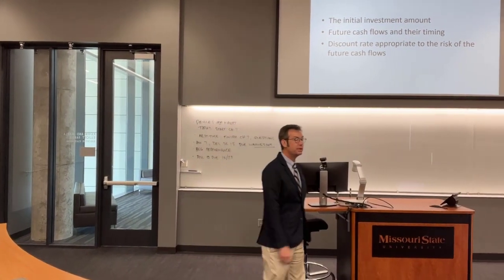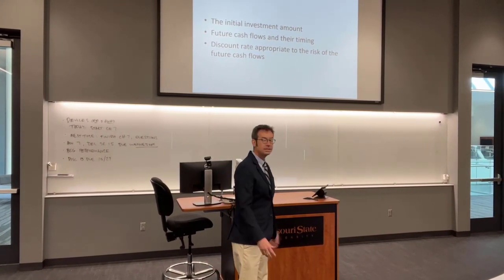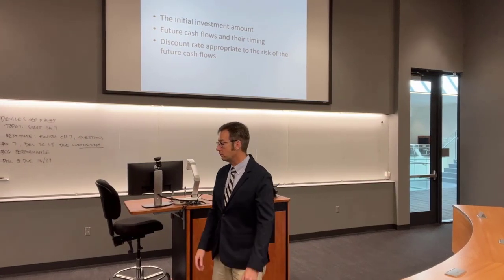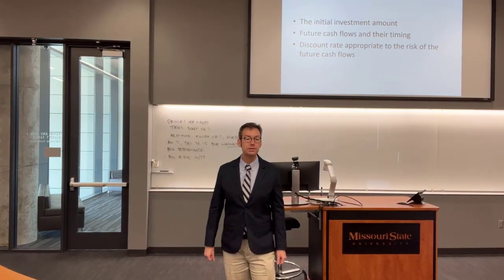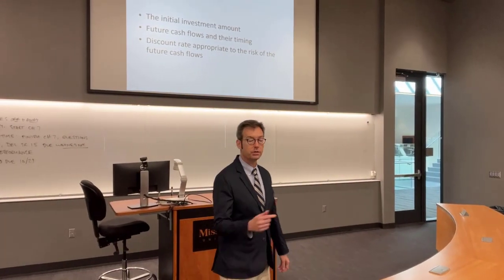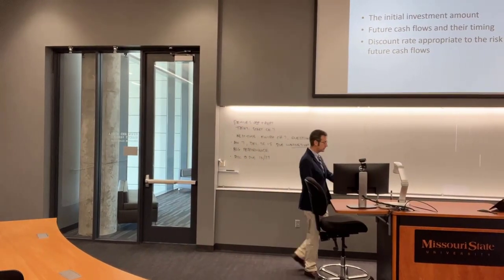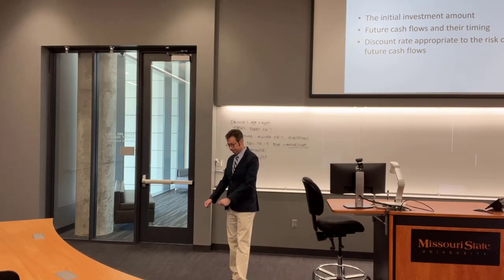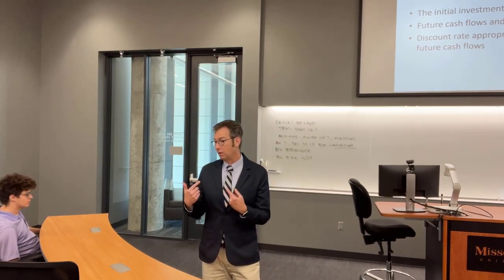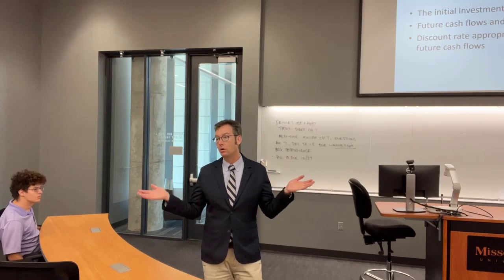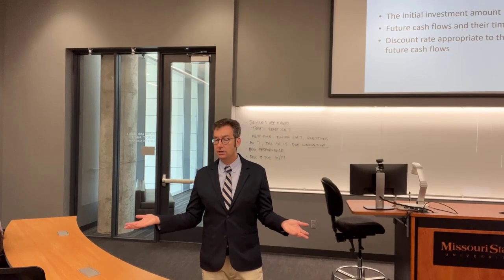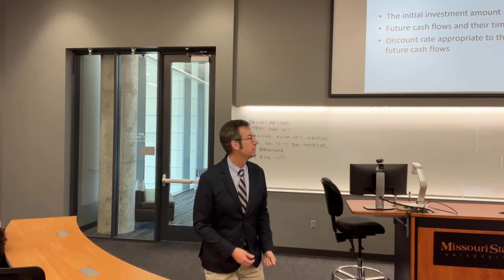So what do we need for NPV? We need the initial investment amount, the future cash flows and their timing — because we know about the time value of money — and a discount rate appropriate to the risk of the future cash flows. That's what Chapter 12 was all about: finding the rate appropriate to the risk of those future cash flows. The easiest ingredient to get is the initial investment, since you can get a quote. The future cash flows and timing, and the discount rate, are really just educated guesses — swags — that require a lot of work and judgment.